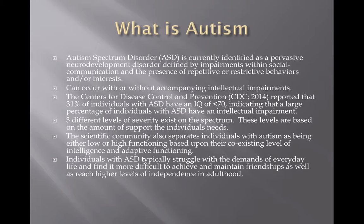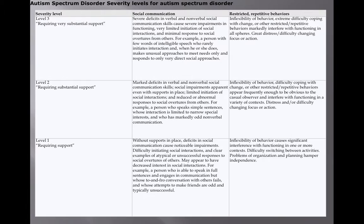The DSM-5 does a pretty good job of separating individuals into three different levels of severity that exist on a spectrum. These levels are based on the amount of support that the individual needs, with level 3 being the highest level of support while level 1 requires the least amount of support. The scientific community also tends to identify these individuals as being either low- or high-functioning, depending on their level of IQ and adaptive behavior or adaptive functioning. Typically, individuals with ASD struggle with the demands of everyday life, find it more difficult to achieve and maintain friendships, and reach higher levels of independence in adulthood.